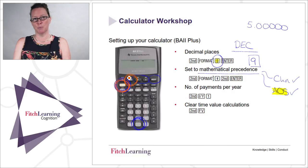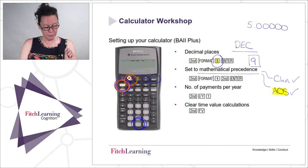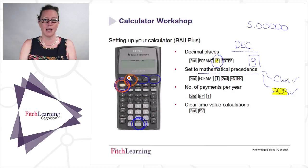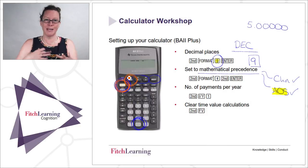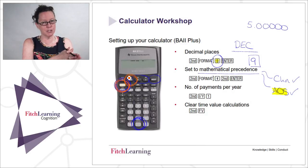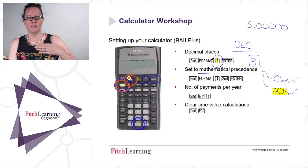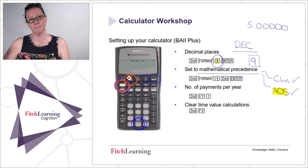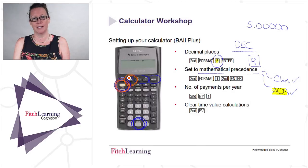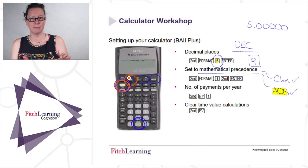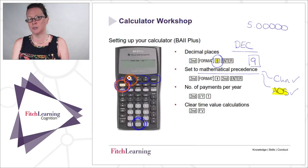What algebraic operating system means is that when you punch calculations in, the system will prioritise powers and routing before multiplication and division, which will be before adding and subtraction. So you don't have to mess around with brackets as much. If it's in chain mode, the calculator does it in chronological order — so five plus one times three gives you the wrong answer in the exam. Make sure it is AOS. When you switch off your calculator, these modes will stay set; it's only if you take out the battery or there's a reboot that you'd need to set it up again.